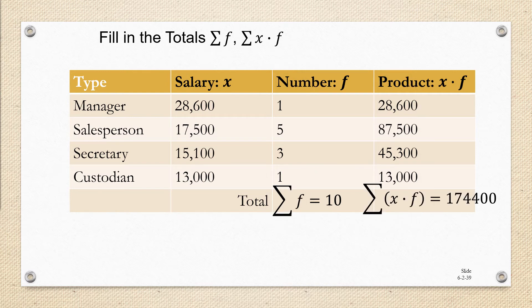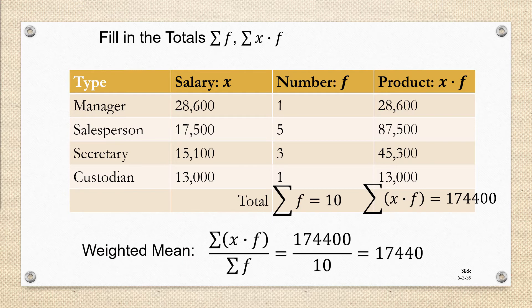The sum of the products is 174,400 in this example, and the mean formula tells us to divide the sum of the products by the sum of the frequencies, and we get 17,440.